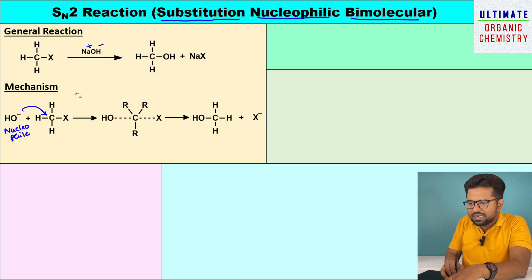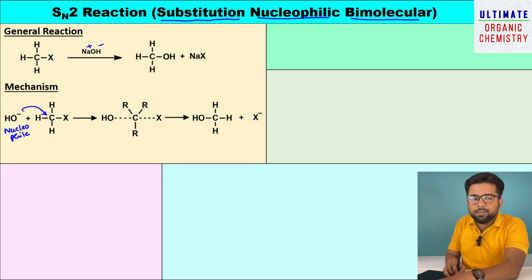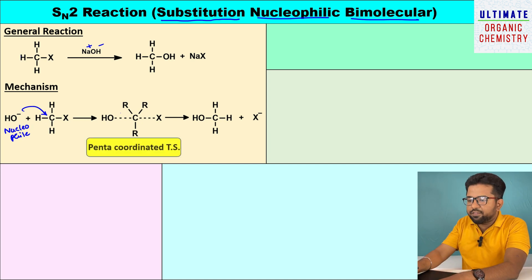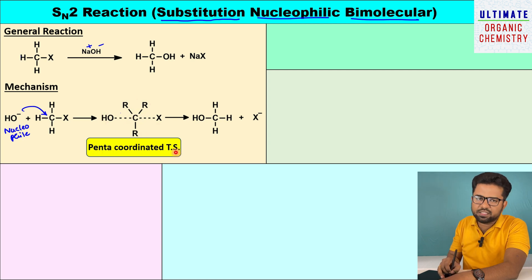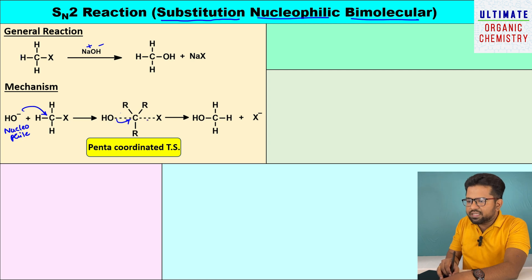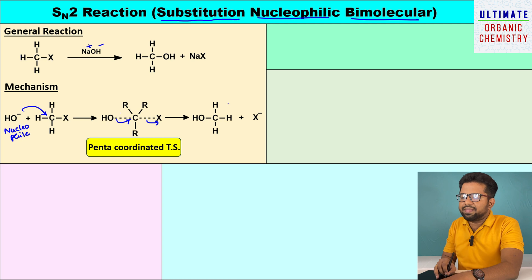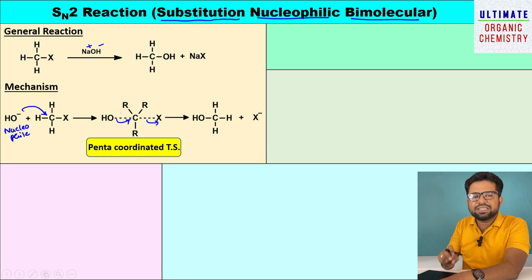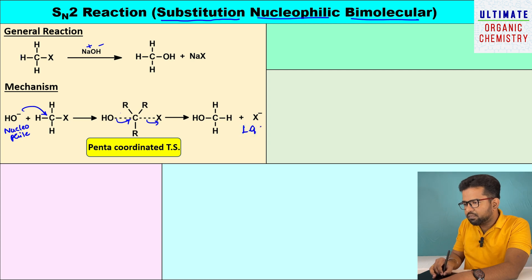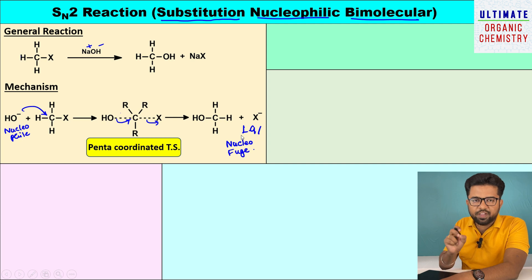Once the nucleophile approaches from the back side, there is formation of a penta-coordinated transition state. Looking at the transition state, the carbon atom is connected to five atoms — it is known as a penta-coordinated transition state. As this transition state forms, OH is coming closer to the carbon and X is leaving from the carbon, leading to formation of the alcohol product. X leaves as X⁻ and is known as the leaving group, otherwise called a nucleofuge.